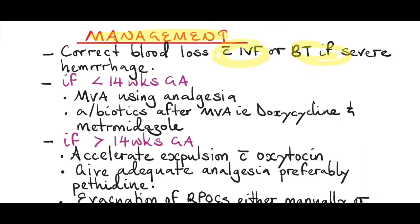If the gestational age is less than 14 weeks, the patient is most likely going to have retained products of conception in the uterus - they will expel but will have retained products. So what you can do is help the patient remove the retained products of conception using a manual vacuum aspiration with analgesia. After the manual vacuum aspiration, cover the patient on antibiotics.